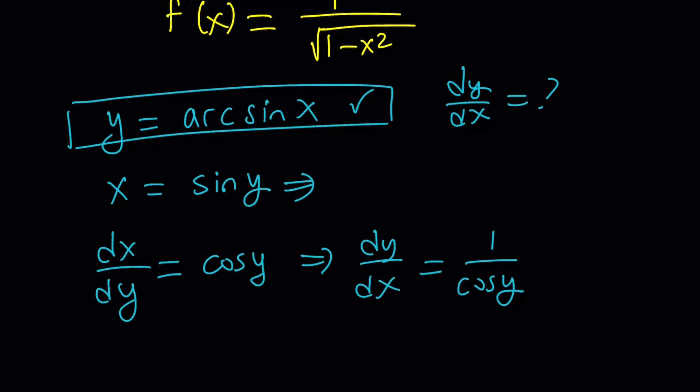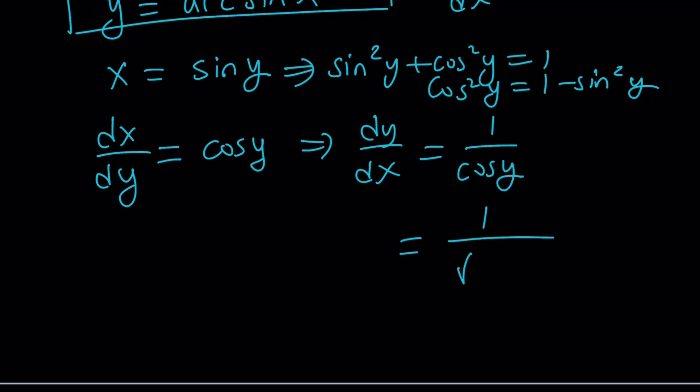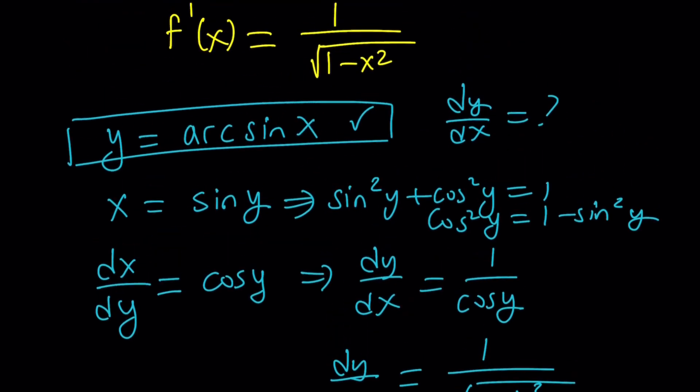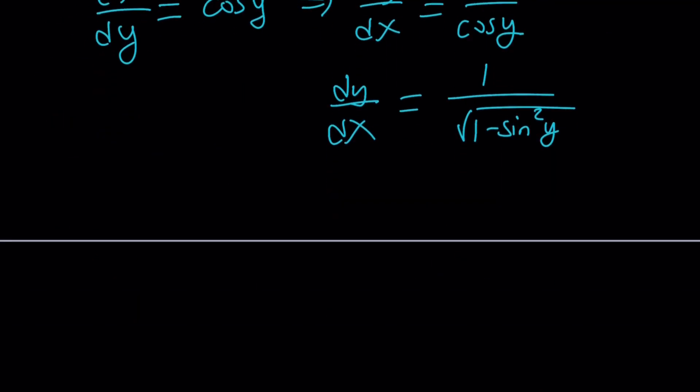Well, if sine of y is equal to x, we know that sine squared y plus cosine squared y is equal to 1. And then from here, we can isolate cosine squared as 1 minus sine squared. And finally, we can write the cosine as square root of 1 minus sine squared. And of course, there are two values, but I'm just going to ignore that. So this is the answer. But what is sine squared y? Well, x is equal to sine y, so sine y is equal to x. Replace it with x and you're going to get the same answer.